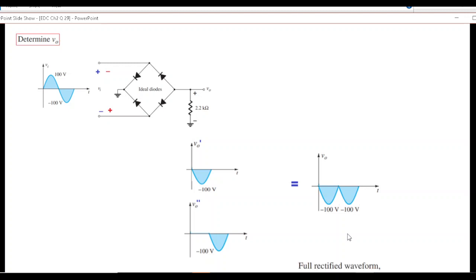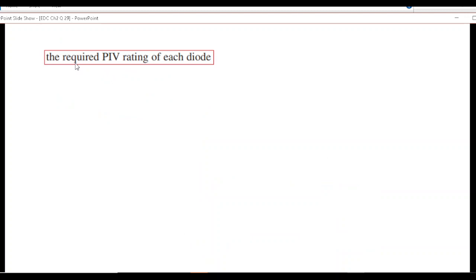So we can write that V naught will represent a full wave rectified waveform with peak voltage minus 100 volts. This is the answer of the first part. Now the second part is the required PIV rating of each diode.